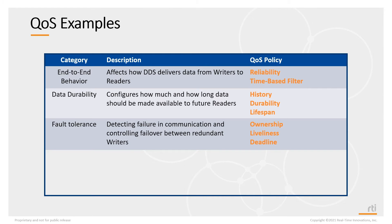If you're building a system that requires fault tolerance — basically a mission-critical or safety-critical system — that means if any part of your system fails, there should be a backup or redundant component that takes over. The ownership, liveliness, and deadline QoS policies offered by DDS can be used to help you build a fault-tolerant system.